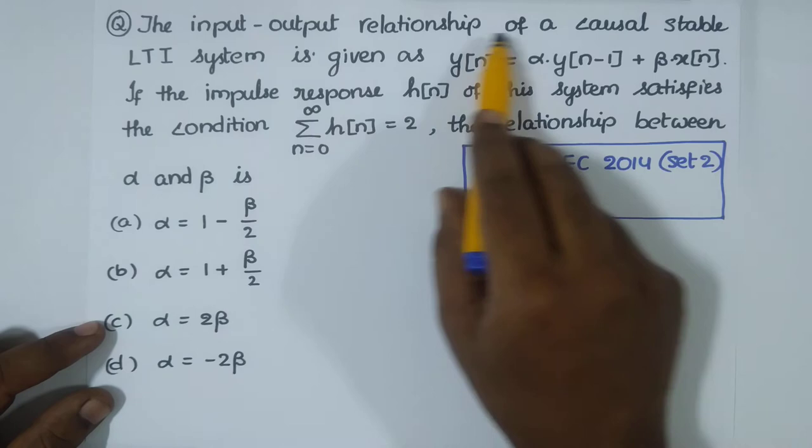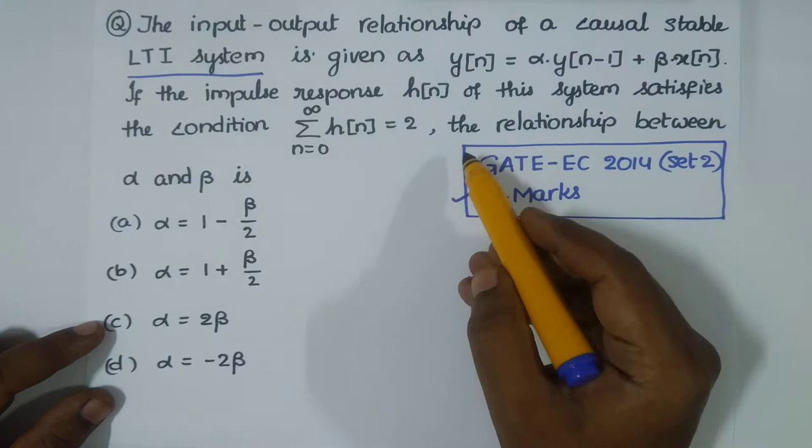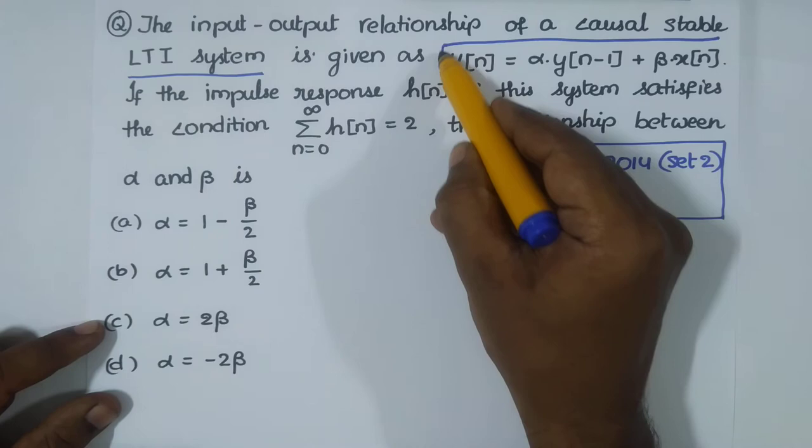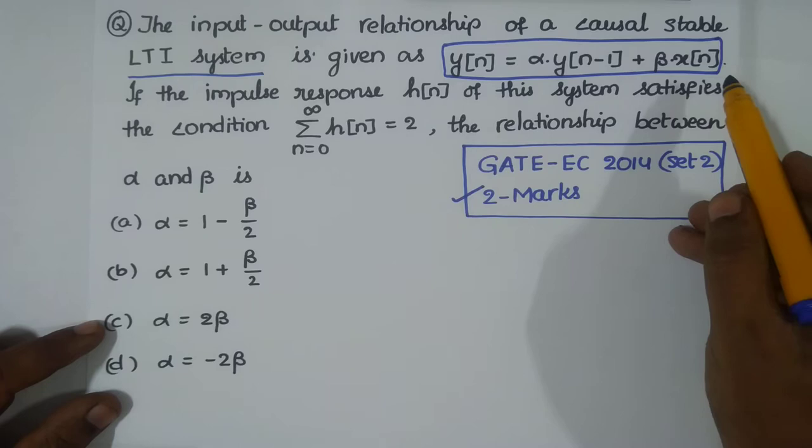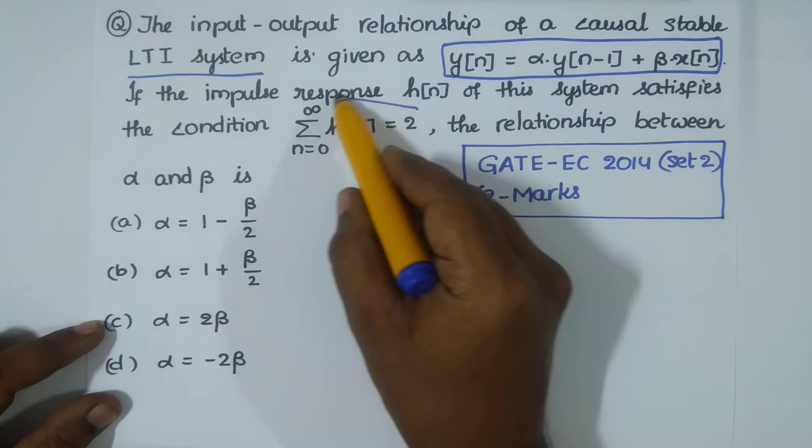The system is both stable and causal. The input-output relationship of a causal stable LTI system is described as: y[n] = α·y[n−1] + β·x[n]. The impulse response H[n] of this system satisfies certain conditions.